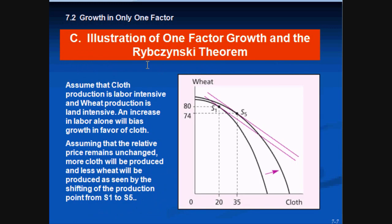A good example of the Rybczynski theorem: assume that cloth is labor intensive and wheat is land intensive. Increasing labor alone will bias growth in favor of cloth. Assuming relative prices remain unchanged, more cloth will be produced and less wheat will be produced, as seen by the shift in production from point S1 to point S5.